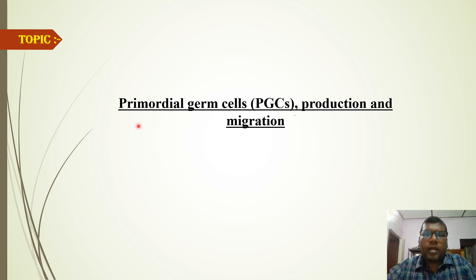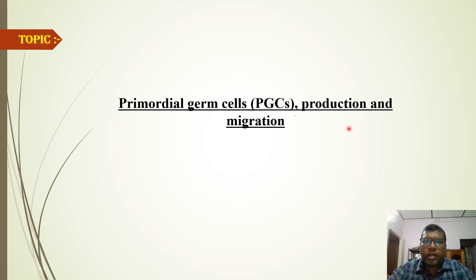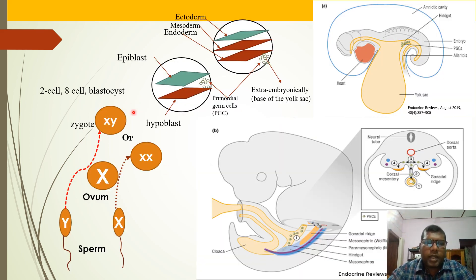Welcome everyone. Our topic of discussion is primordial germ cell — its production and migration. This primordial germ cell will eventually become a sperm, ovum, or oocyte. In my previous lecture I was talking about the genetic factor which determines the sex of the organism. If it is XY then it will be a male, and if it is XX then it will be a female. If the organism carries a Y chromosome, it will be male, provided the SRY factor is expressed properly.